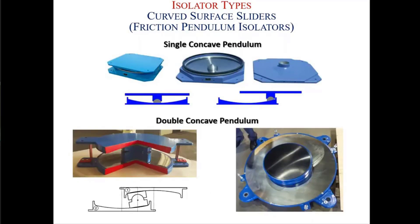There are three types of pendulum isolators commonly used. The first invented was the single concave pendulum, but it had problems: it depends on friction, and friction produces heat, causing the friction coefficient to drop. In a high seismic region, the upper plate moves on the lower concave plate generating a lot of heat and reducing the friction coefficient. Also, displacement capacity is limited — for 50 centimeters of displacement capacity, the lower plate must have a diameter of at least 1 meter.